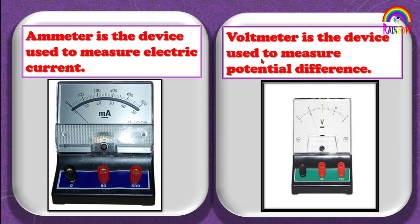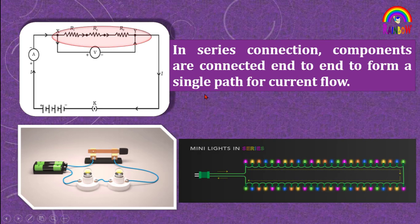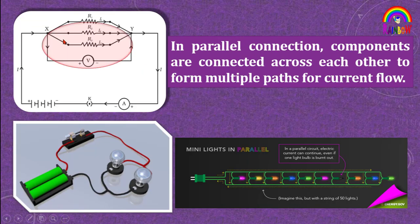we must have the basic knowledge of series and parallel connections. See, in series connection components are connected end-to-end like this to form a single path for current flow, whereas in parallel components are connected across each other to form multiple paths for current flow. See here, these ends are connected to a common point and that common point is connected to the battery.